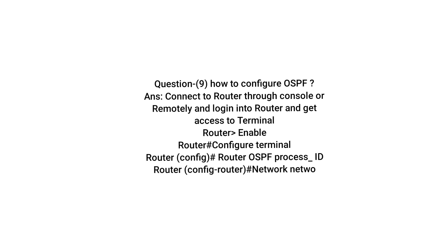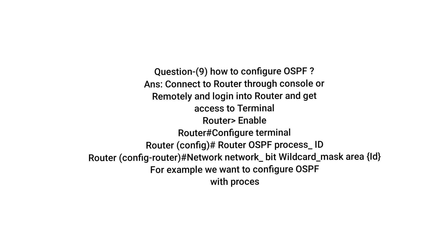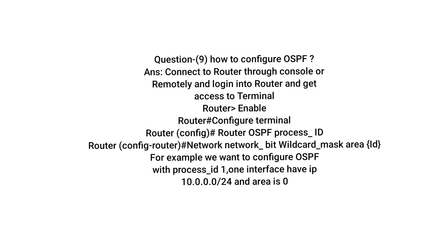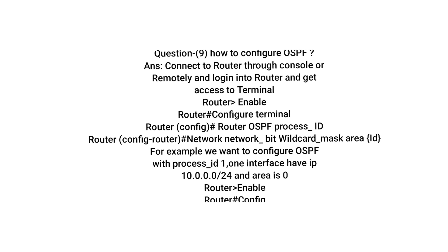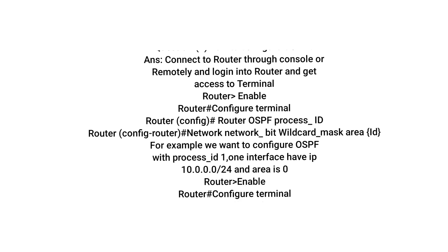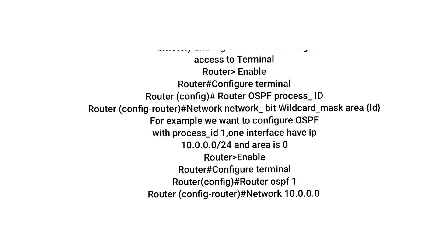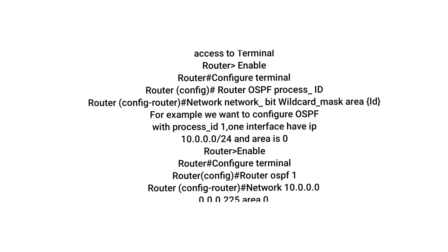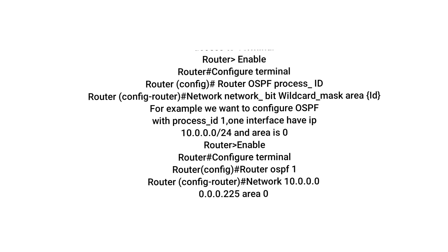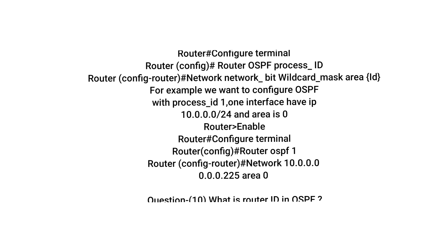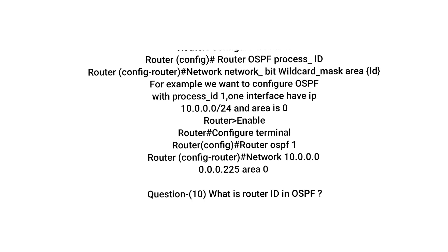Question: How to configure OSPF? Answer: Connect to the router through console or remotely and log in to get access to the terminal. Commands: Router> enable, Router# configure terminal, Router(config)# router ospf [process-id], Router(config-router)# network [network-bits] [wildcard-mask] area [area-id].